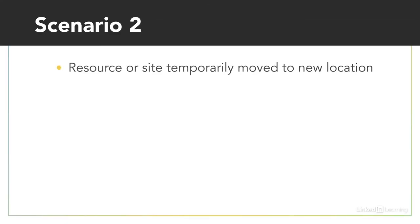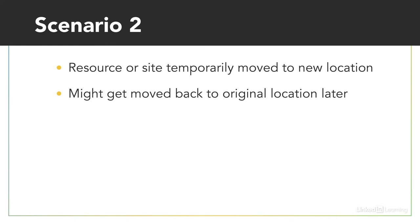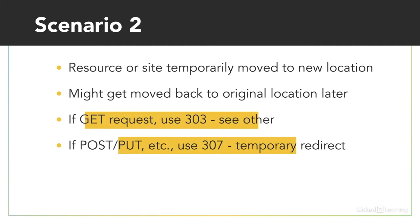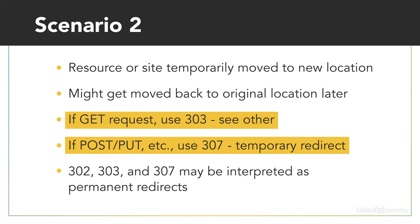Scenario 2: You've temporarily moved a resource, but you might bring it back later. The traditional approach here is to use 302 found, but this is technically wrong. You should use either 303 see other, which forces a GET request to the new location, or 307, which provides the browser with a new URL and sends either a GET, POST, push, or pull request to the new location. This last part is important: 303 always forces a GET request, but if the target is meant to receive form data sent using POST, 307 must be used instead. Both 303 and 307 are for temporary redirects, meaning there's a good reason for the user to assume the resource will return to the original location. However, if 303 and 307 redirects remain in place for a long time, search engines may treat them as 301 redirects instead.